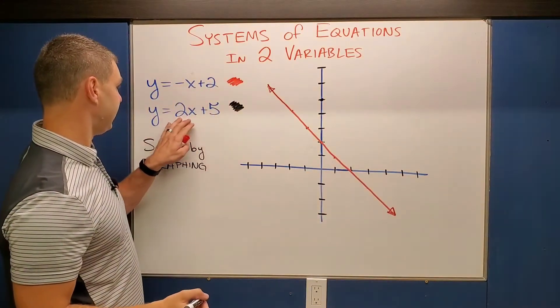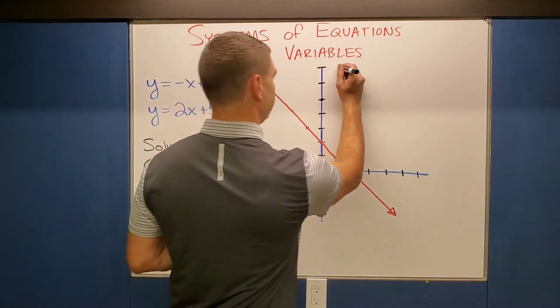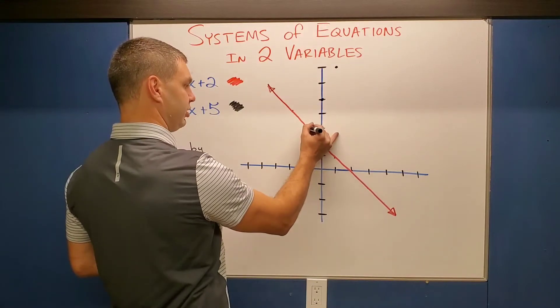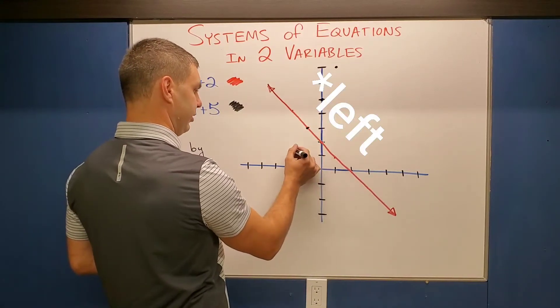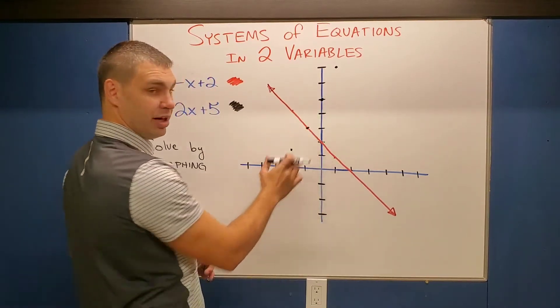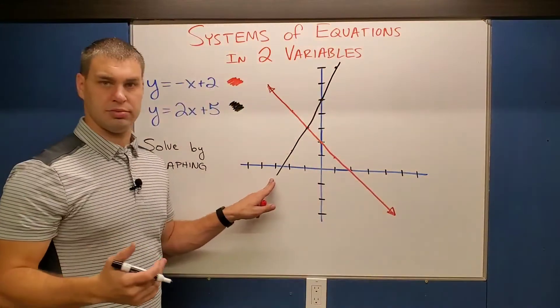And then this has a slope of positive two, which means I need to go up two into the right one. So up two into the right one. I could also go, since that'd be off the graph, then I could also go down two into the right one, down two into the right one again. And you can see already, this is going to cross at this point. Let me just draw the line.